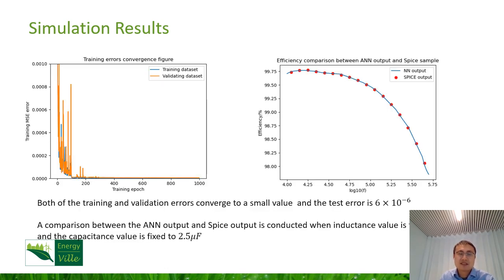Firstly, this is the result of the artificial neural network model for semiconductor losses. After collecting 10,000 sets of data, they are put into a neural network to train. As we can see on the left, both of the training and validation errors converge to a small value after 200 episodes of training. Then in order to further validate the performance of the artificial neural network, a comparison between the ANN output and the SPICE output is conducted when the inductance value and the capacitance value are fixed. As shown in the figure on the right, you can see the ANN outputs are pretty accurate to the SPICE simulation.